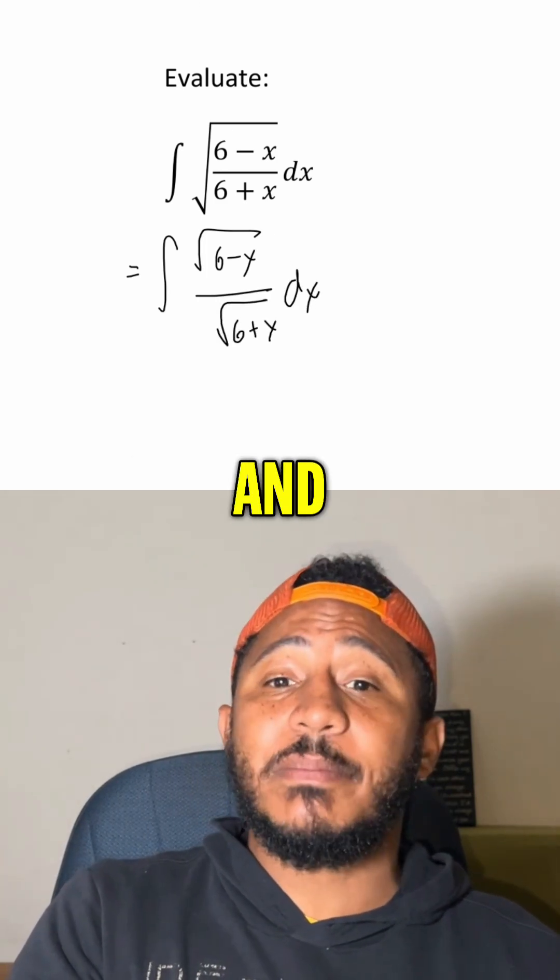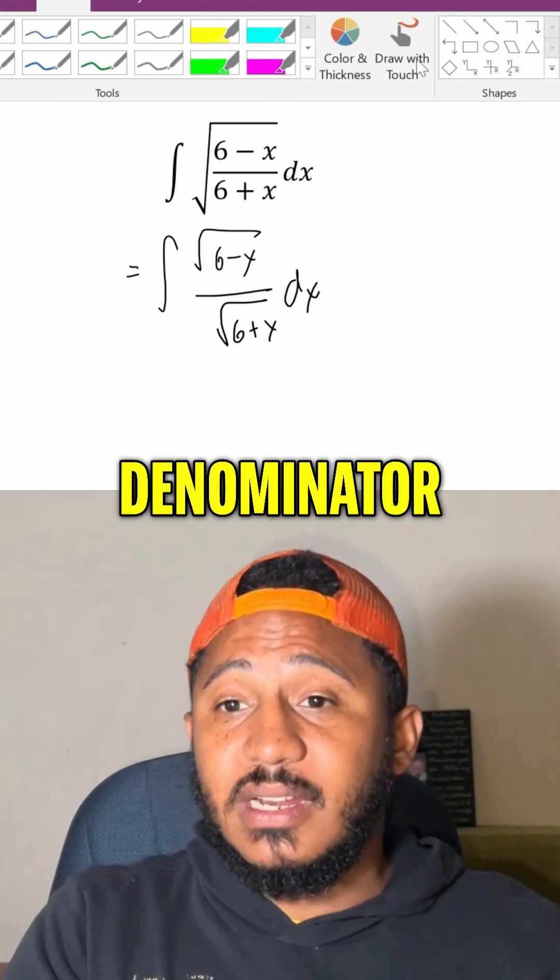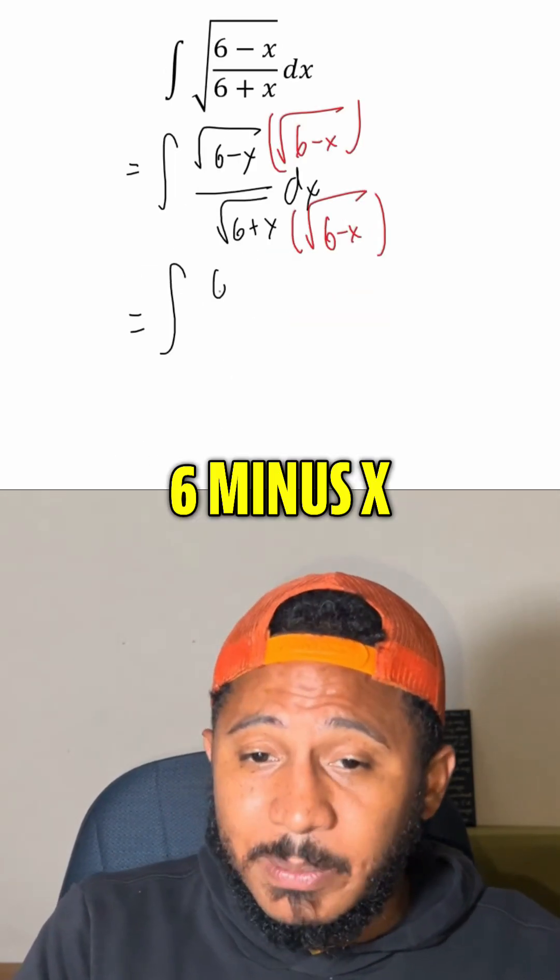And now, we'll multiply top and bottom by the conjugate of the denominator. So the square root of 6 minus x times the square root of 6 minus x is just 6 minus x.